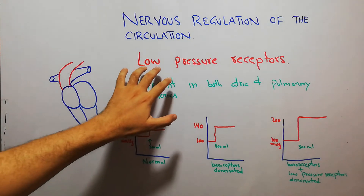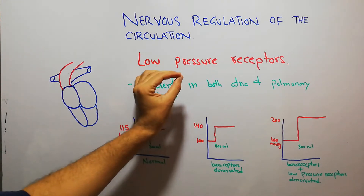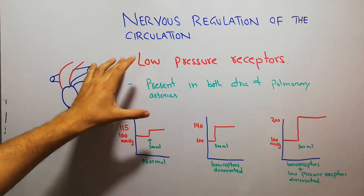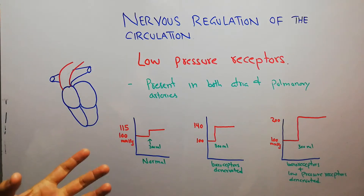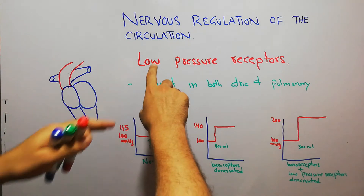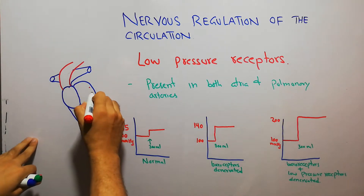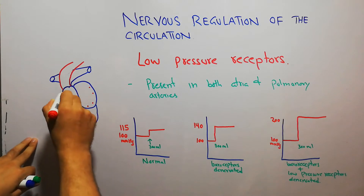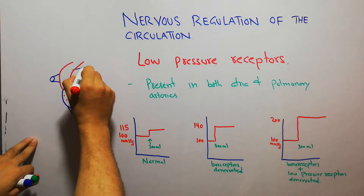In this lecture we are going to talk about low pressure receptors. Low pressure receptors basically help in control of arterial pressure, just like baroreceptors and chemoreceptors. But they are located in low pressure areas — they are present in both the atria of the heart and in the pulmonary arteries.